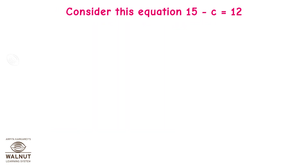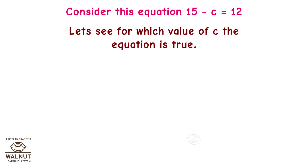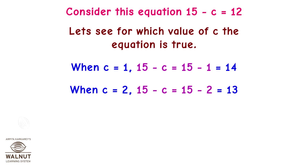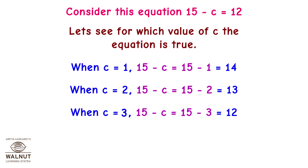Consider this equation: 15 minus c is equal to 12. Let's see for which value of c the equation is true. When c is equal to 1, 15 minus c equals 14. When c is equal to 2, 15 minus c equals 13. When c is equal to 3, 15 minus c equals 12.